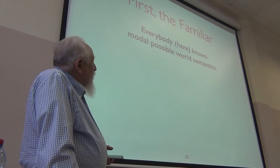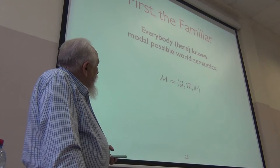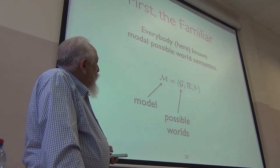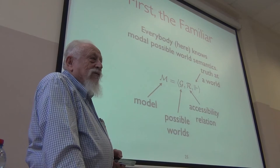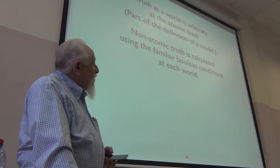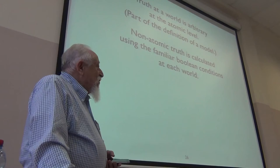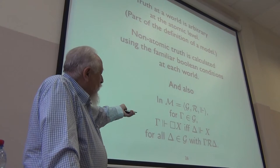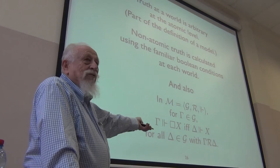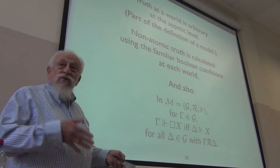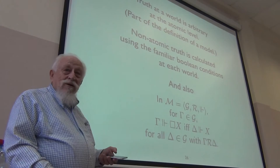Now it's time to look at semantics. A standard Kripke model has possible worlds, an accessibility relation, and a notion of something being true at a world. Truth at the atomic level is arbitrarily specified as part of the model. Non-atomic truth at each world uses Boolean connectives. The main thing: box x is true at a world gamma if x is true at any delta accessible from gamma — the familiar clause. You get different modal logics by putting different conditions on the accessibility relation.